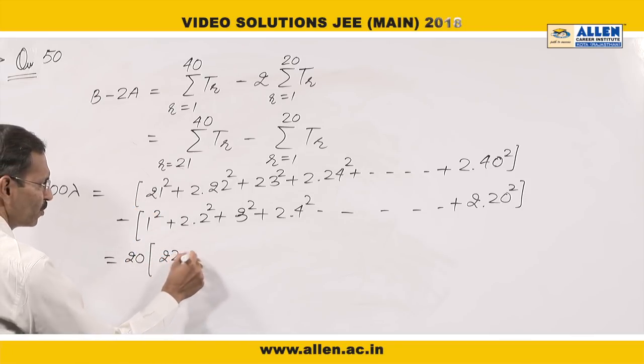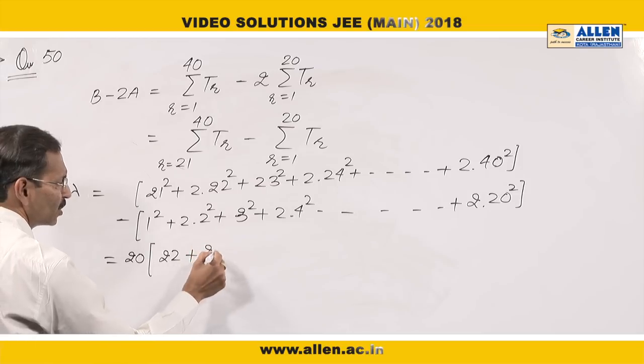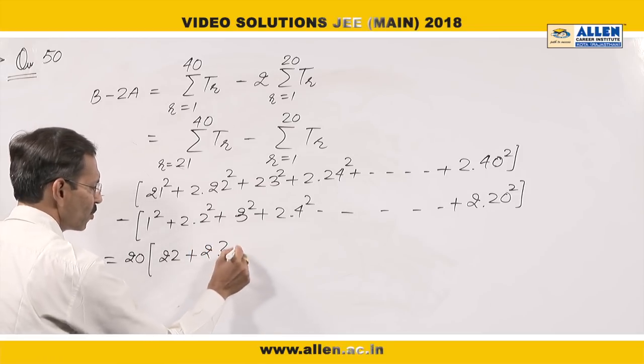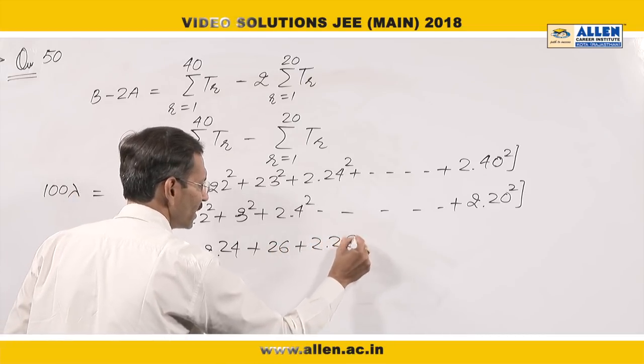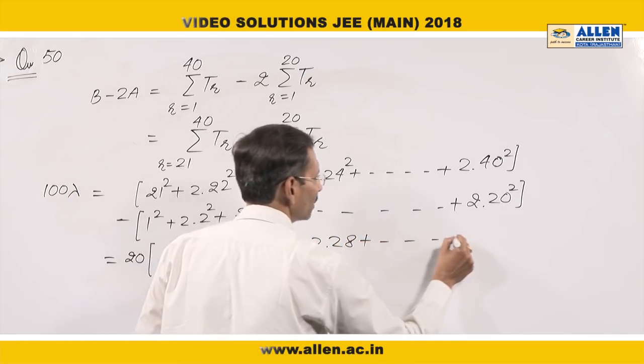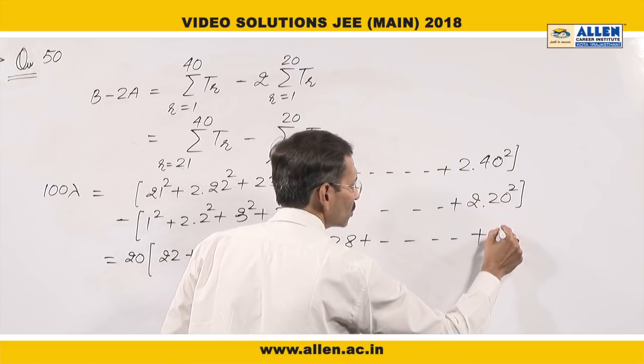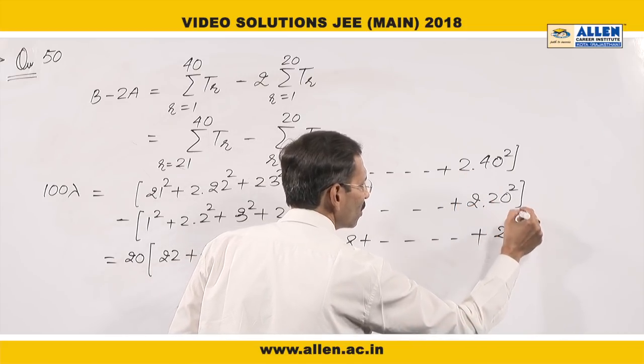In this pair, I will have 2 into 24. In this pair, 26, and 2 into 28 and so on. At last, we will have 2 into 60.